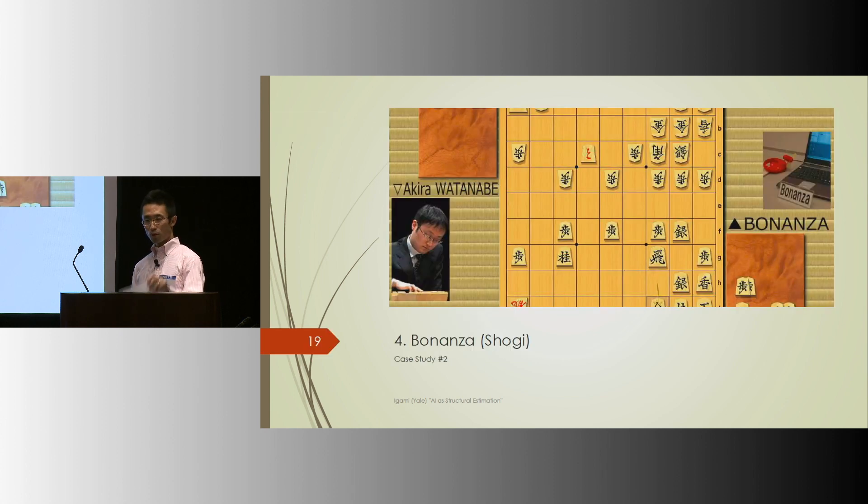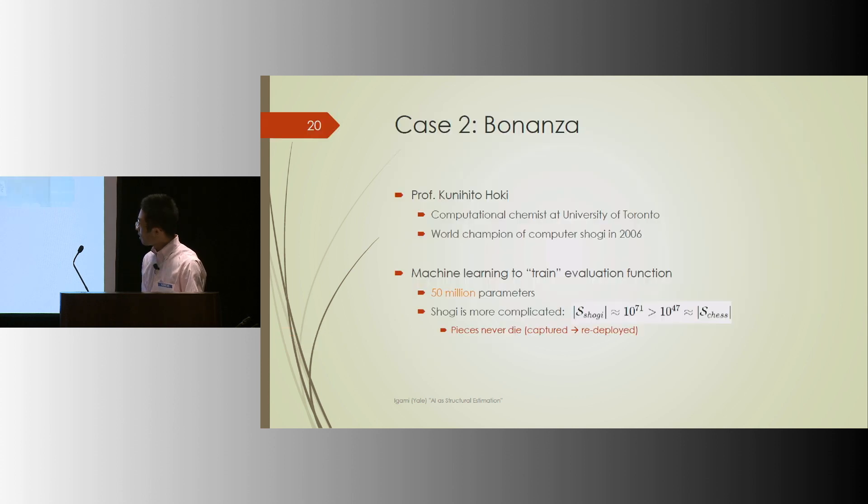Case study number two, Bonanza, for Shogi. Here's the story. Professor Kunihito Hoki, an academic chemist, then at the University of Toronto, coincidentally, spent his spare time developing a computer program to play Shogi. And the next year, he won the world championship in computer Shogi. So there must be something wrong with Toronto.